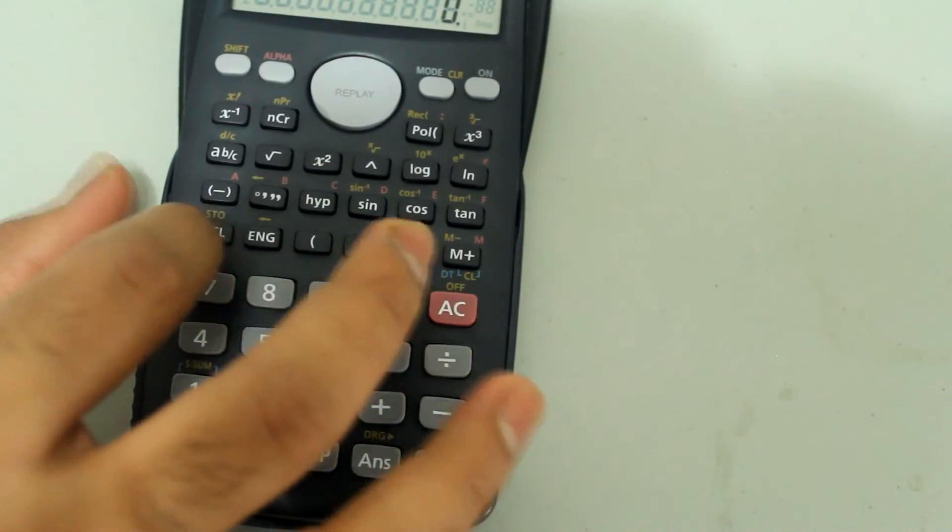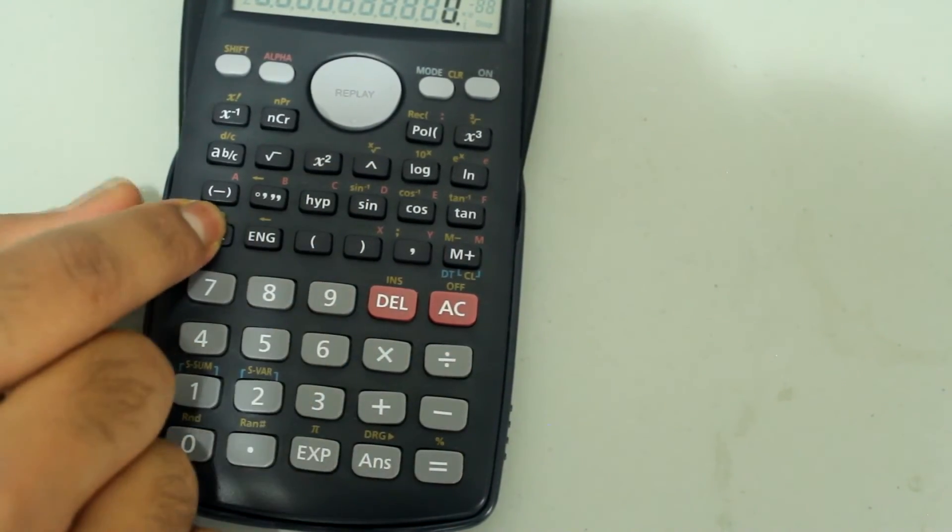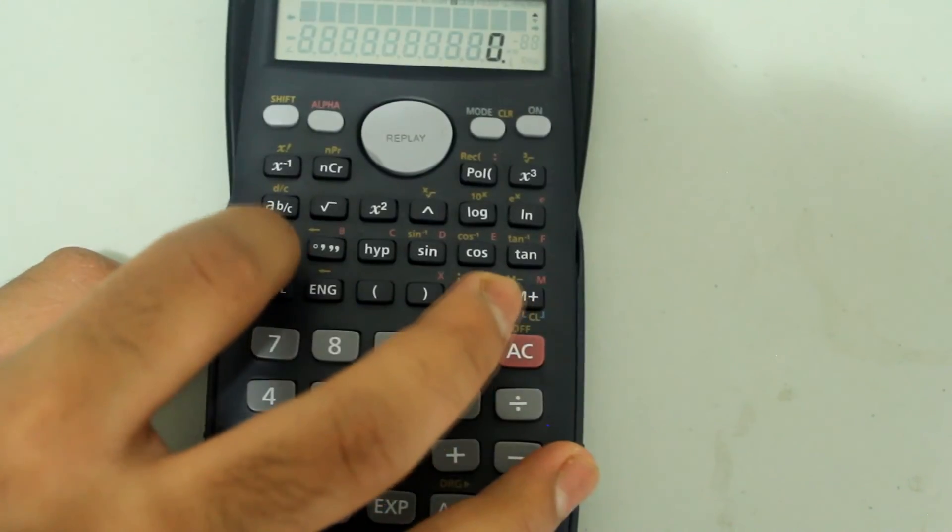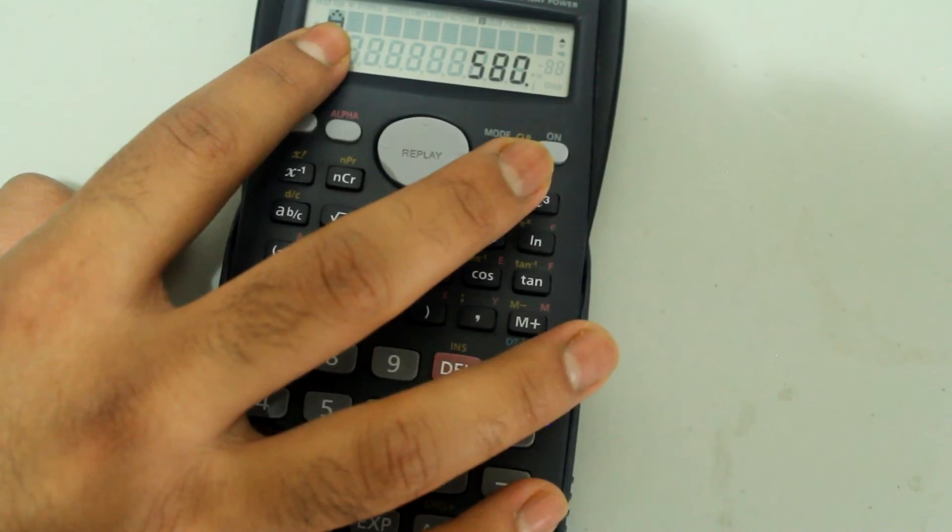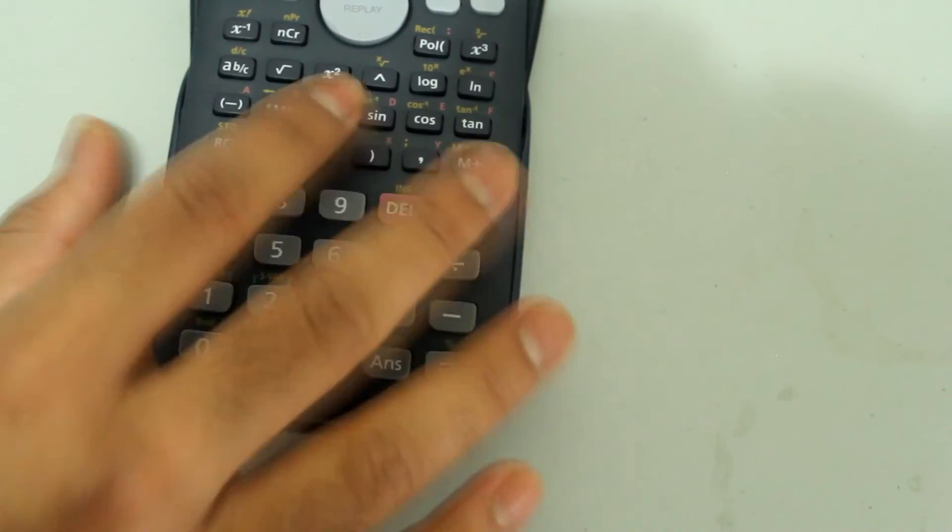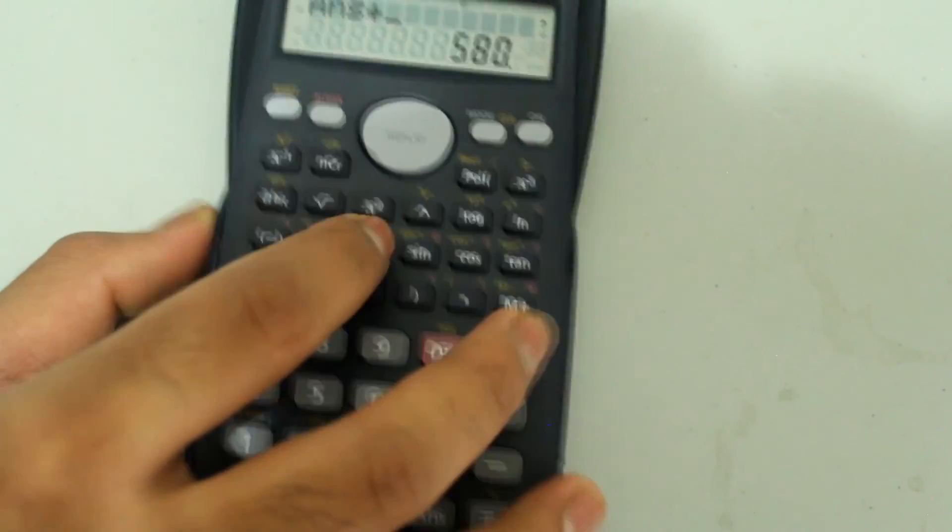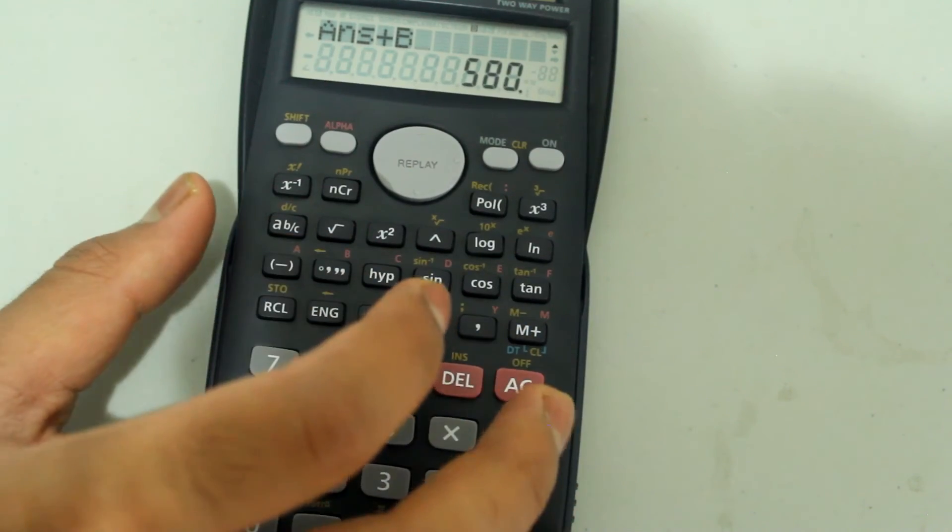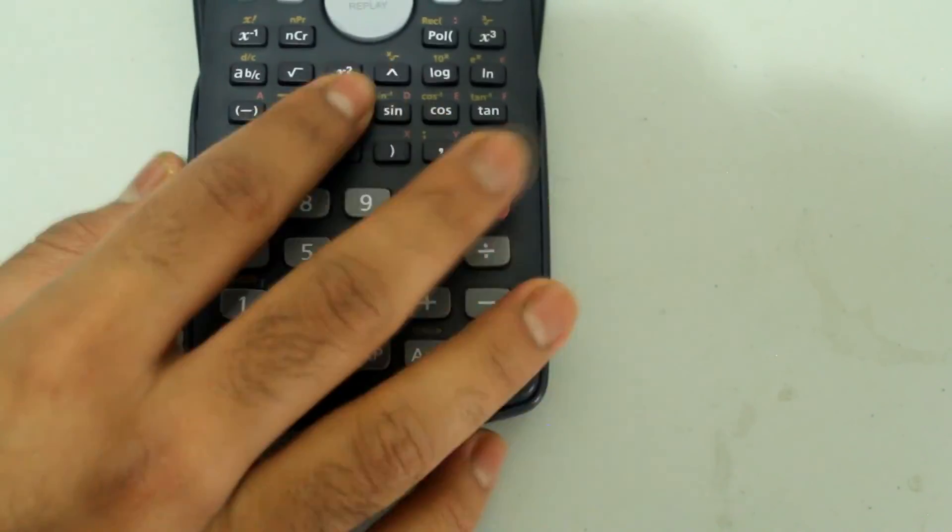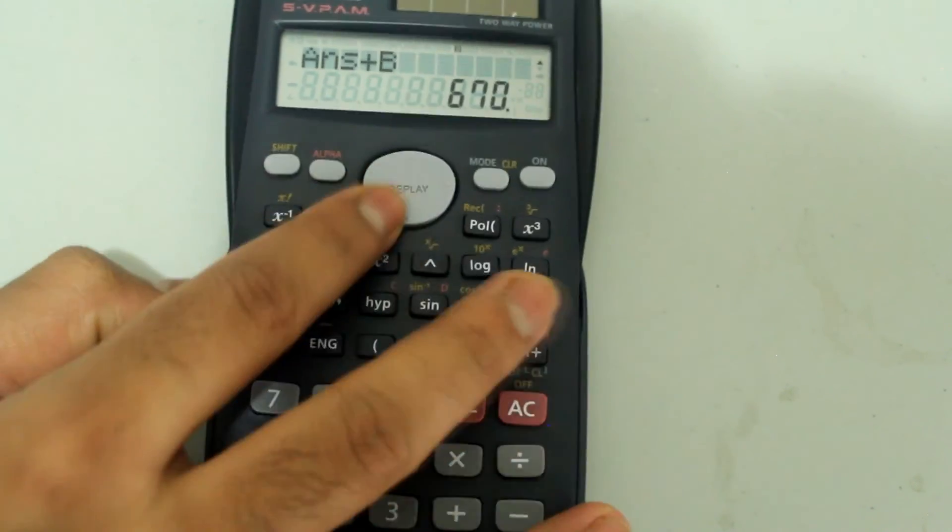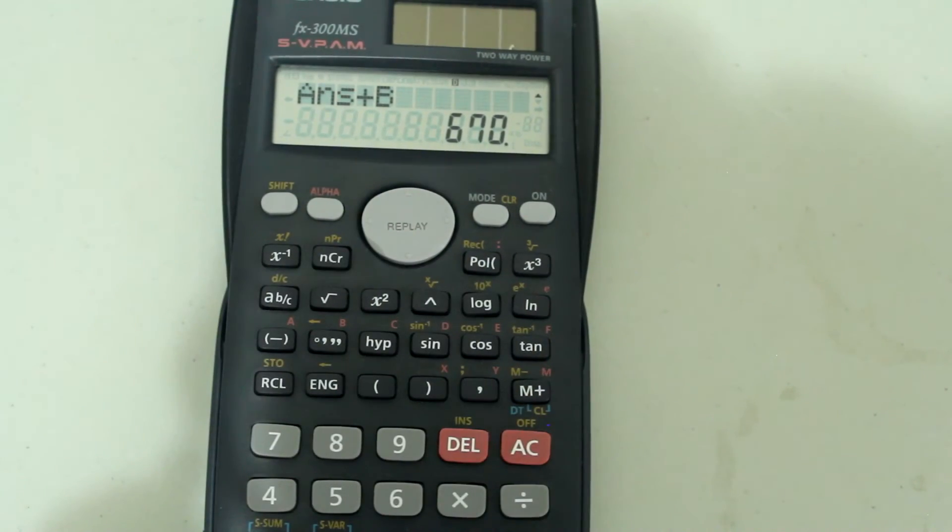Now I can recall A, press equals, then I can do plus recall B. Just press equals and I get the answer. You can do this for however many values you saved.